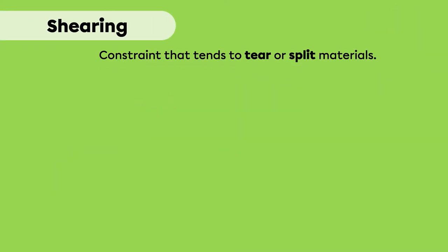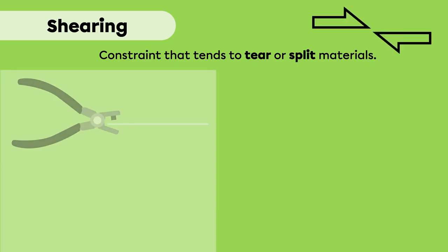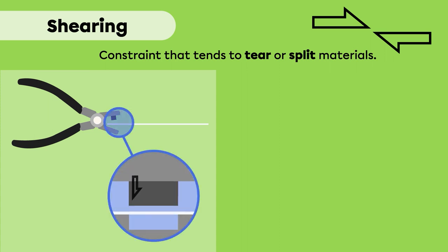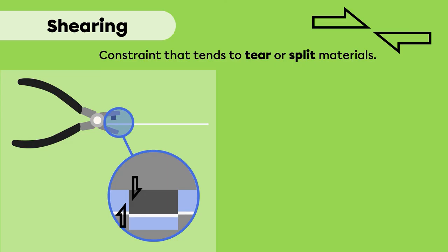Lastly, shearing is a constraint that tends to tear or split materials. These are two parallel forces in opposite directions, but slightly shifted apart from each other. Shearing is represented by this symbol. This is the case when using a hole punch to pierce a sheet of paper: the upper part exerts a downward force, while the lower part exerts an upward force. These two forces are slightly shifted, causing the sheet to tear.